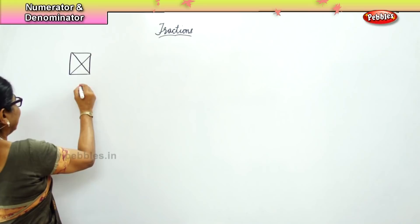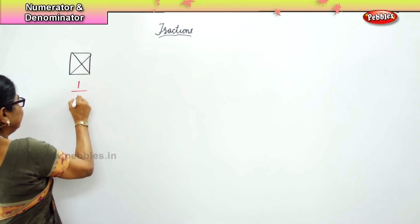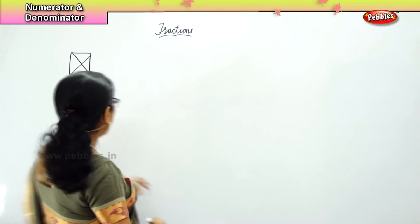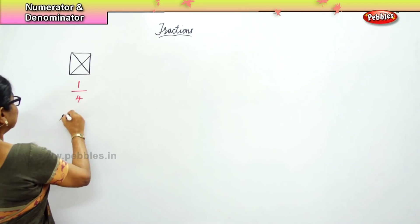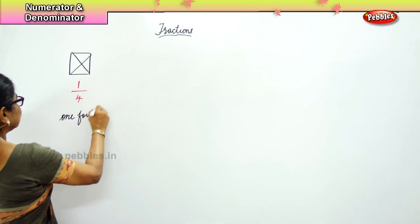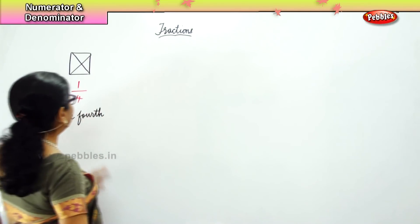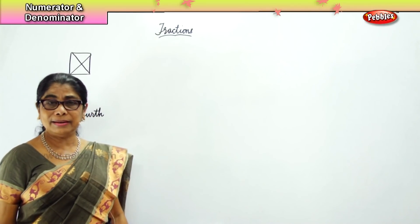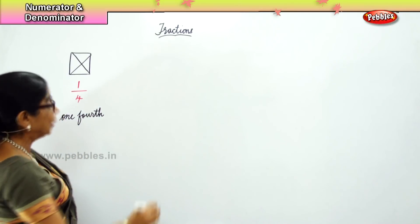This we call 1 by 4, and we also call it 1 fourth. This 1 is the numerator and this 4 is the denominator.